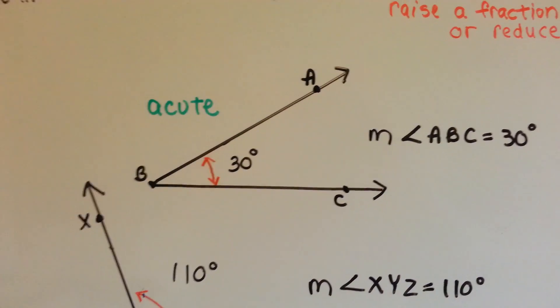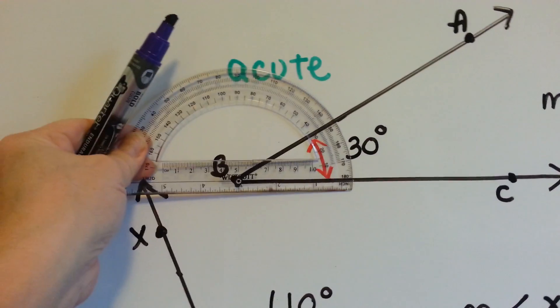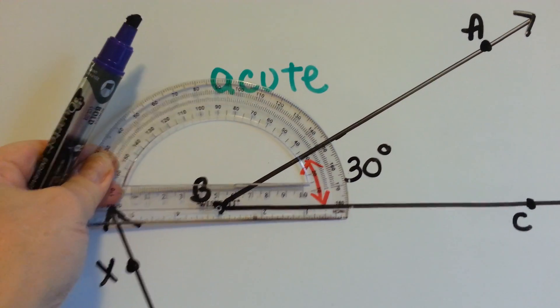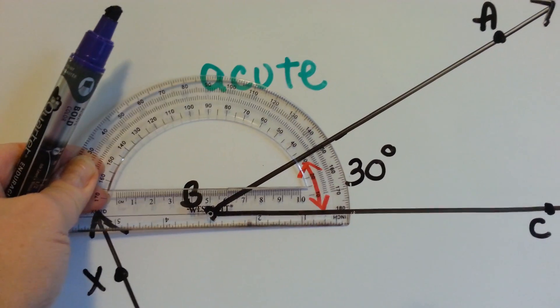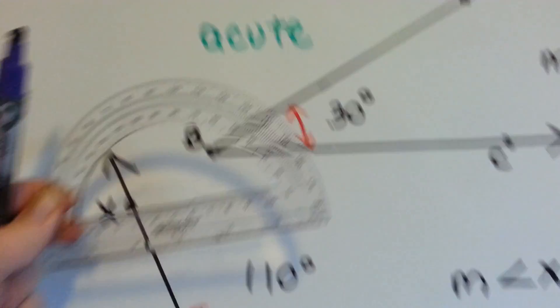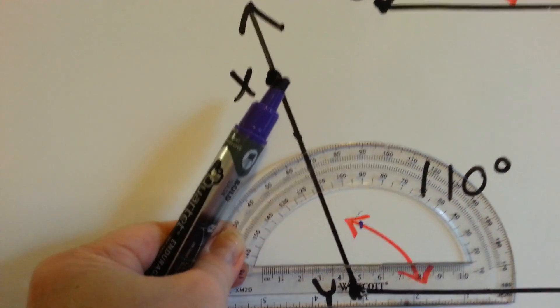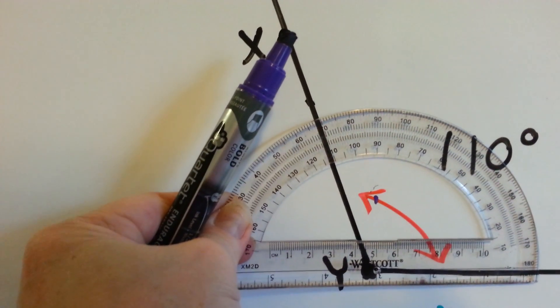So here's an acute angle, and we measured it. We lined up the vertex with the hole and with the line at the bottom by the inches, and we saw that this was a 30 degree angle. It landed on the 30. And then this one is 110. We line up the vertex and the line and the hole, and we saw that this is 110.